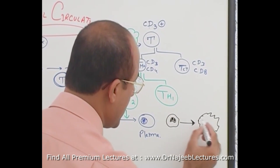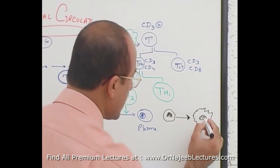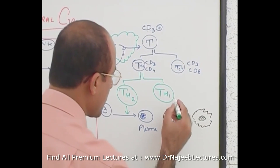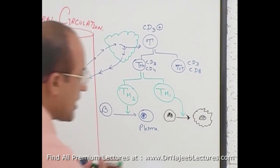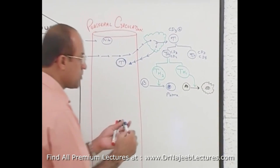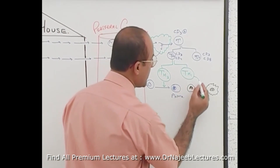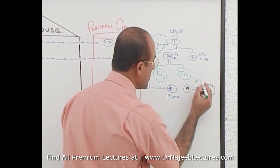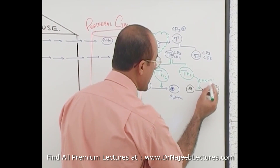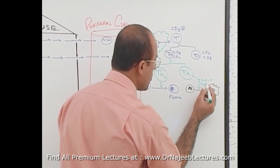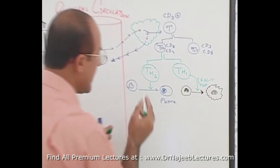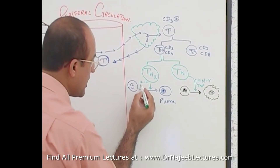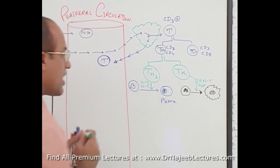T helper 1 cells produce chemical mediators or cytokines that stimulate macrophages. Specifically, T helper 1 cells are masters at producing interferon-gamma and tumor necrosis factor, while T helper 2 cells are masters at producing interleukin-4 and interleukin-5.